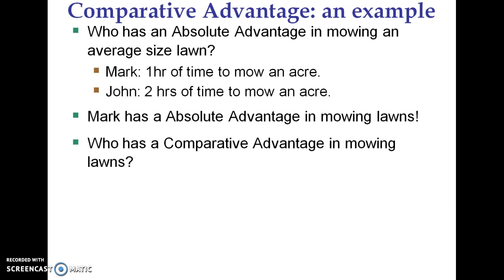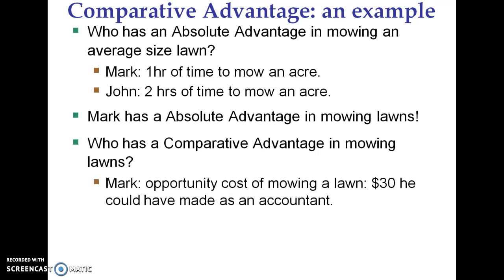Remember, comparative advantage is based off of opportunity cost. You have a comparative advantage when you have a lower opportunity cost than someone else. So, who has a comparative advantage in mowing lawns? Well, if Mark mows a lawn, it takes him one hour, and in that time period he could have made $30 an hour as an accountant. So his opportunity cost for this example is $30 he could have made.